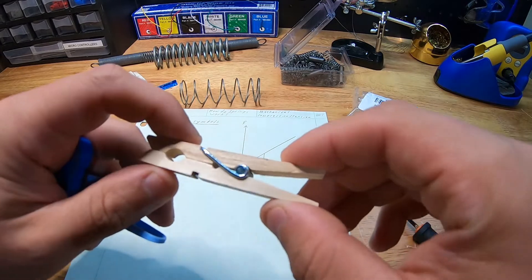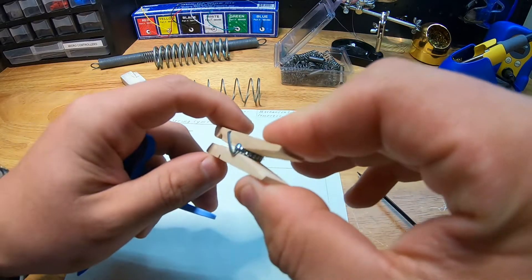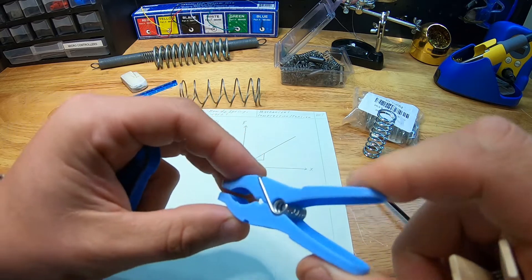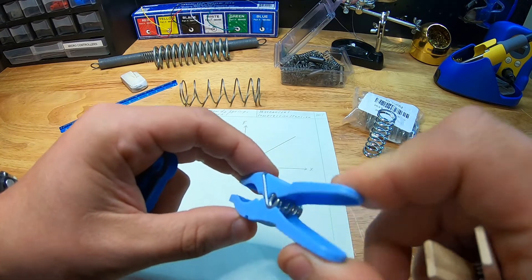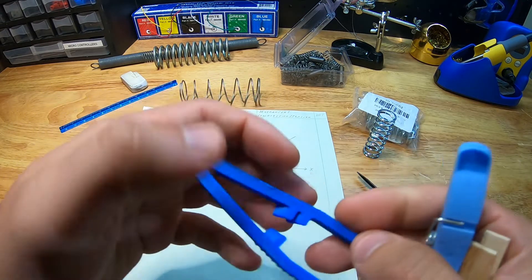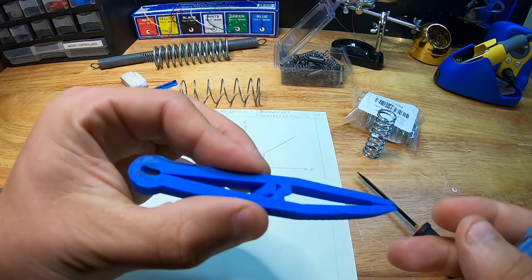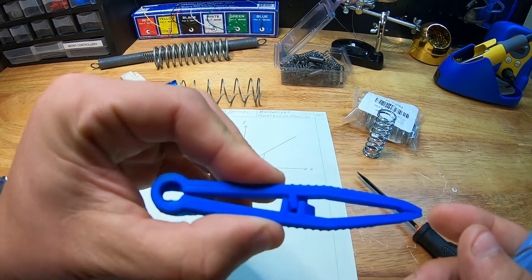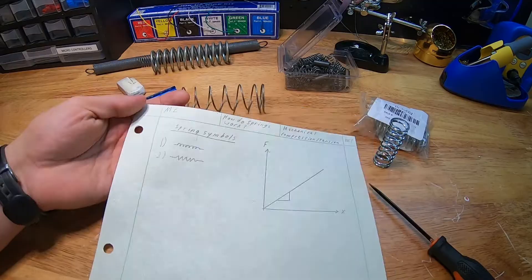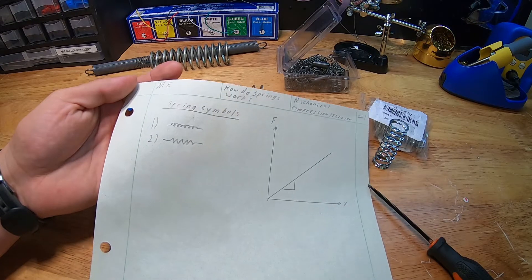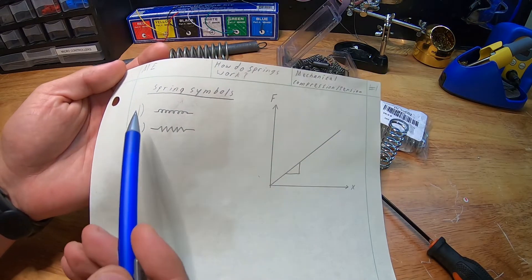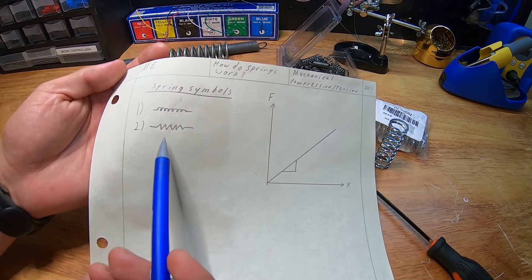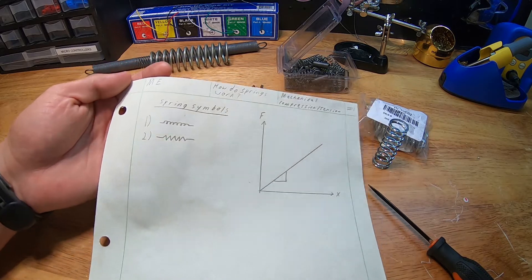Another type of spring that is commonly used is what's called a torsion spring, where it takes angular or rotational deflection and converts it into torque, such as these clothespins or my 3D printed tweezers. But that's for another video. For the electrical engineering viewers out there, spring symbols commonly look like an inductor or a resistor, not that there's much similarity outside of that.